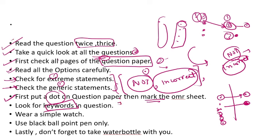These were some MCQ paper-solving tips. Next: wear a simple analog watch. Do not wear a smart watch, because smart watches are not allowed in examination centers. Digital watches may also be an issue with some examiners. Try to use an analog watch. Also note that wall clocks are not always available in all examination centers.